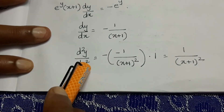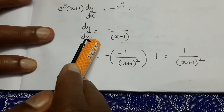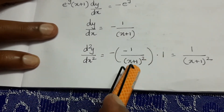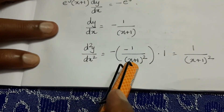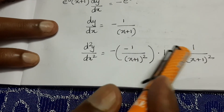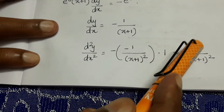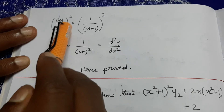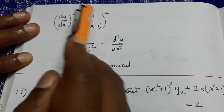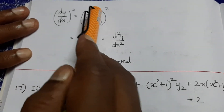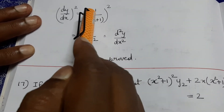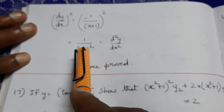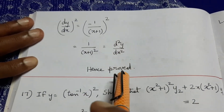Differentiating again, d²y/dx² equals minus 1 by (x+1) whole square, which equals 1 by (1+x)². And (dy/dx)² equals minus 1 by (1+x) whole squared equals 1 by (1+x)². So d²y/dx² equals (dy/dx)². Hence proved.